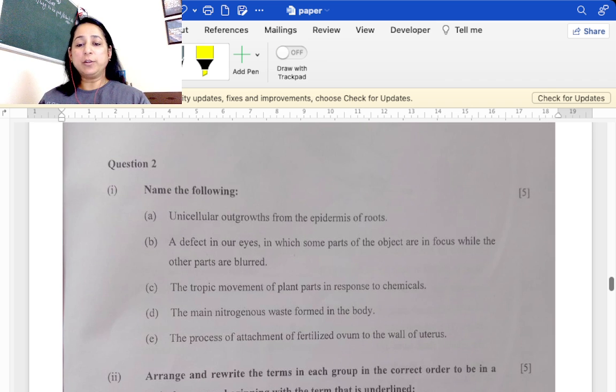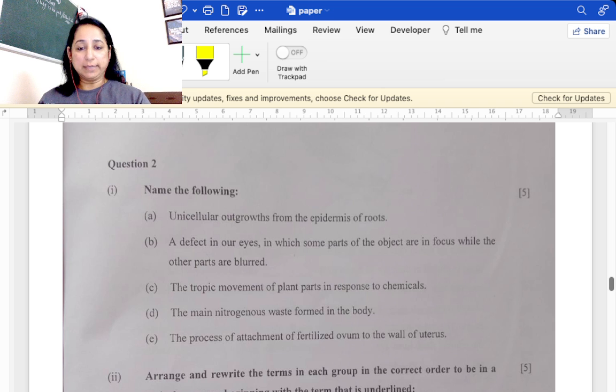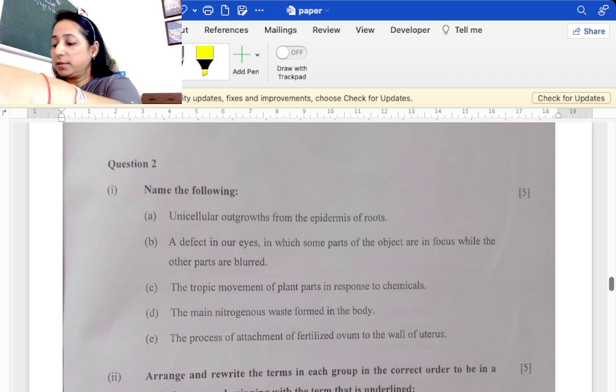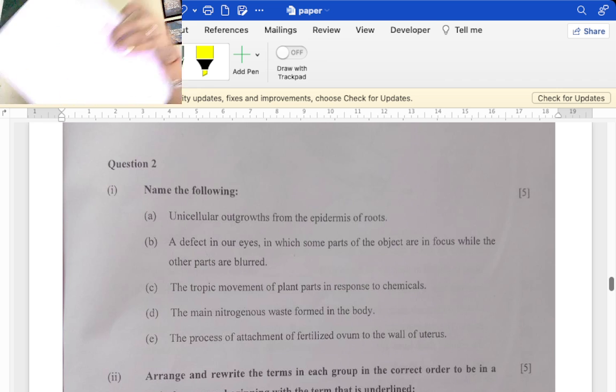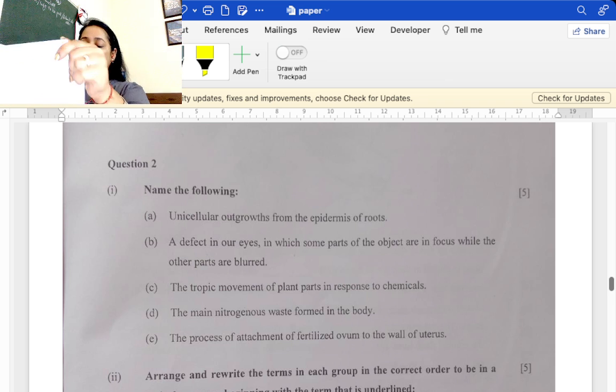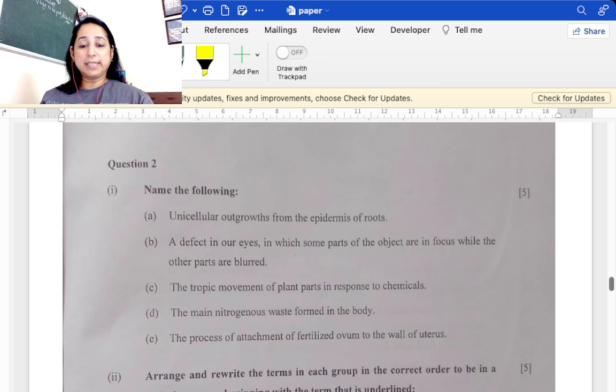Now name the following. Listen carefully, I may not be able to write everything, so you can listen carefully. Unicellular outgrowth of epidermis of a root would be the root hair. The defect in our eyes in which some parts of objects are in focus while others are blurred, this is astigmatism. Tropic movement of plant parts in response to any chemical is chemotropism.